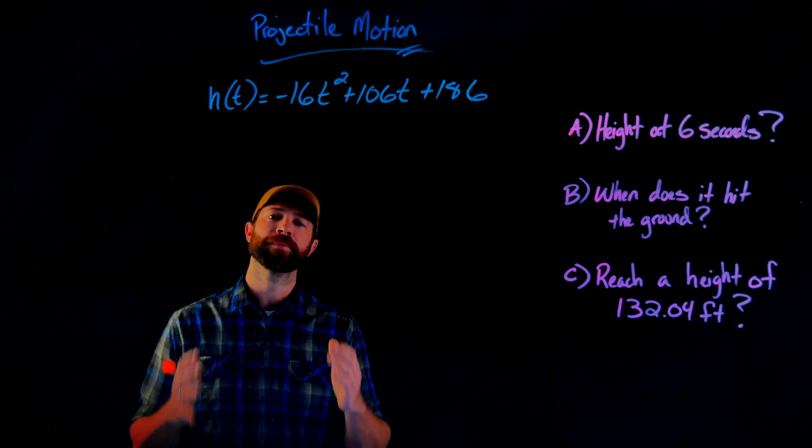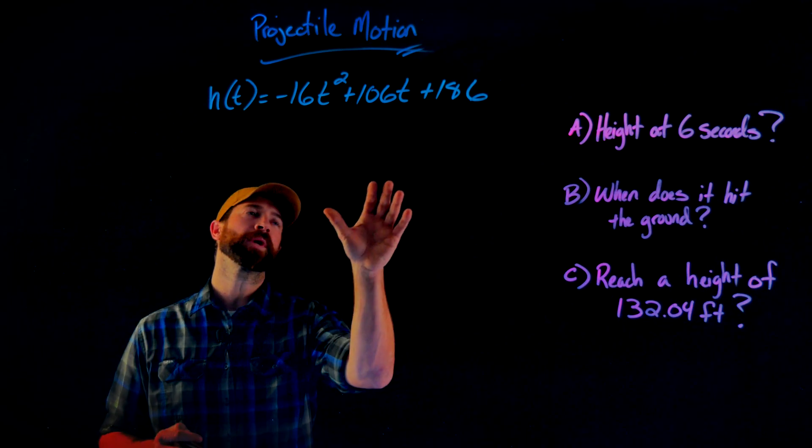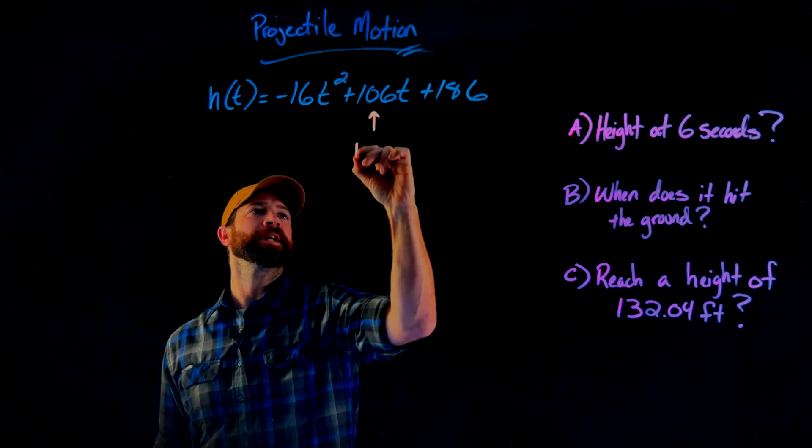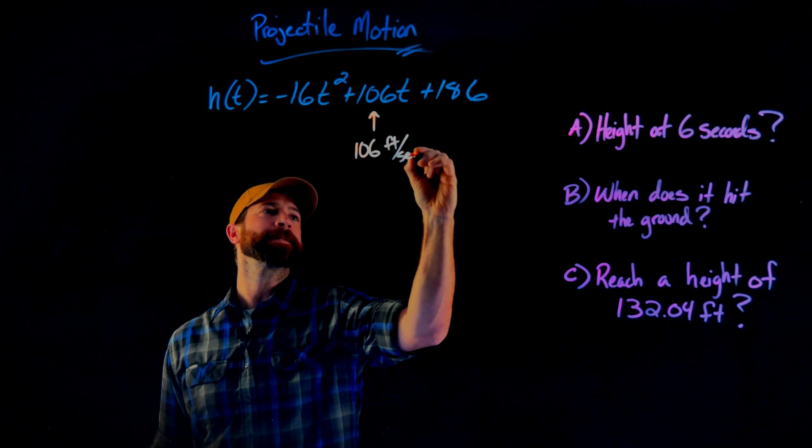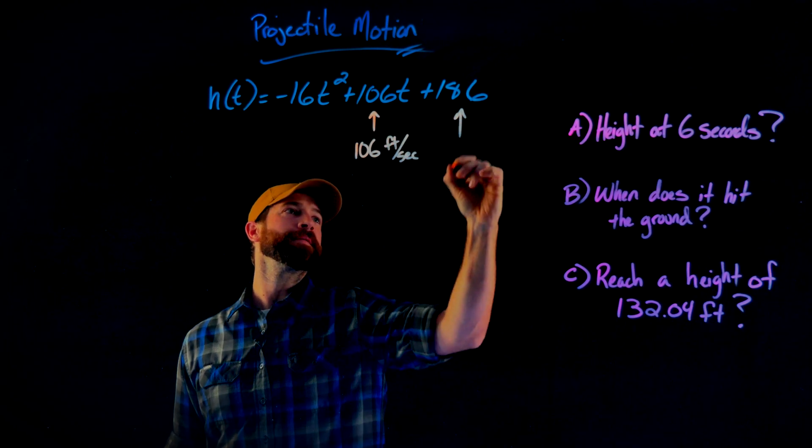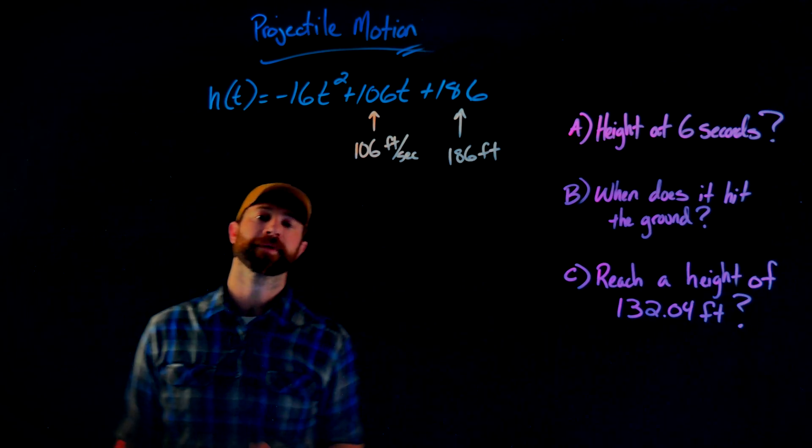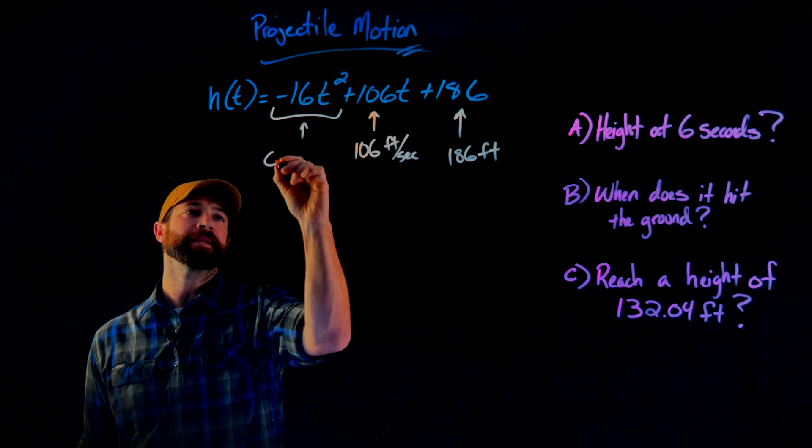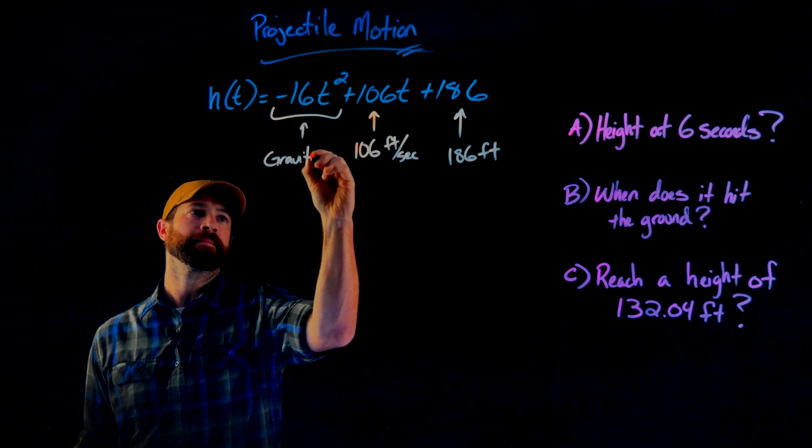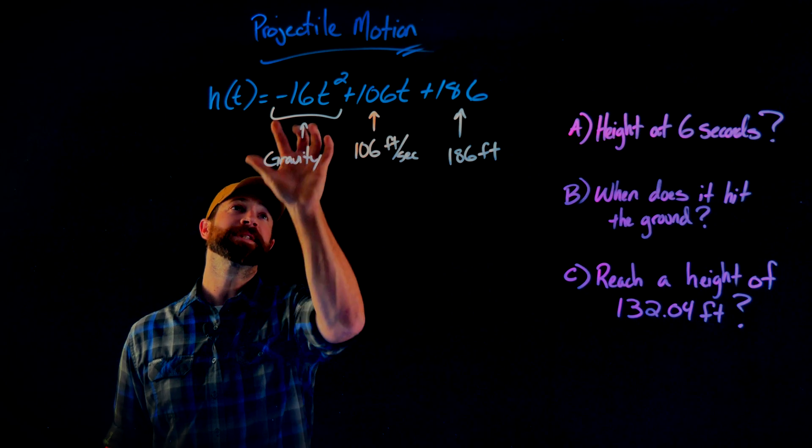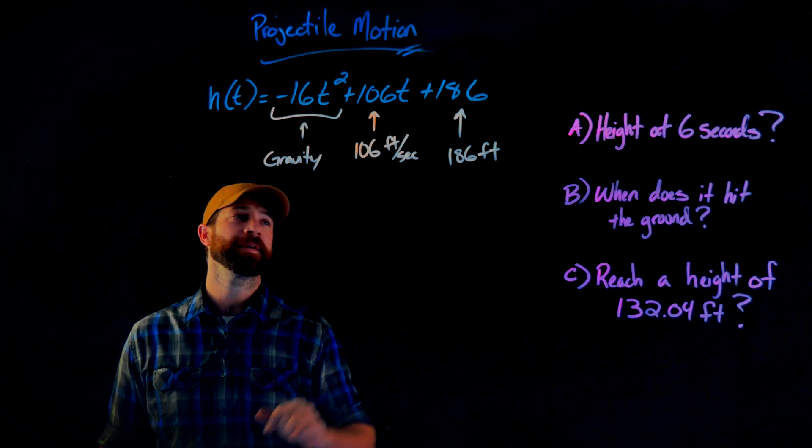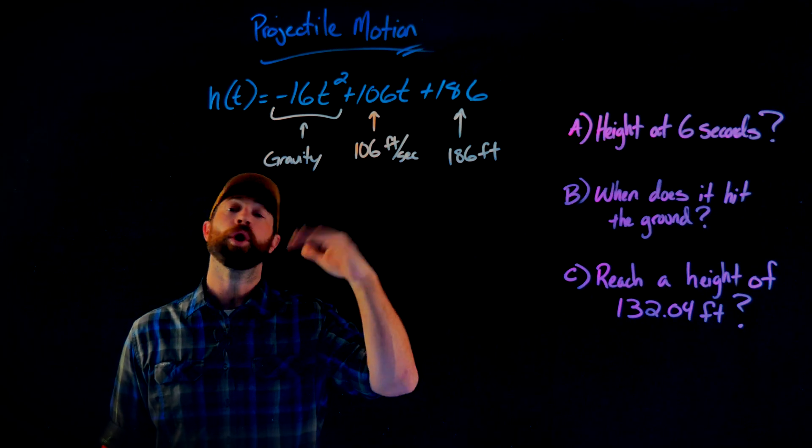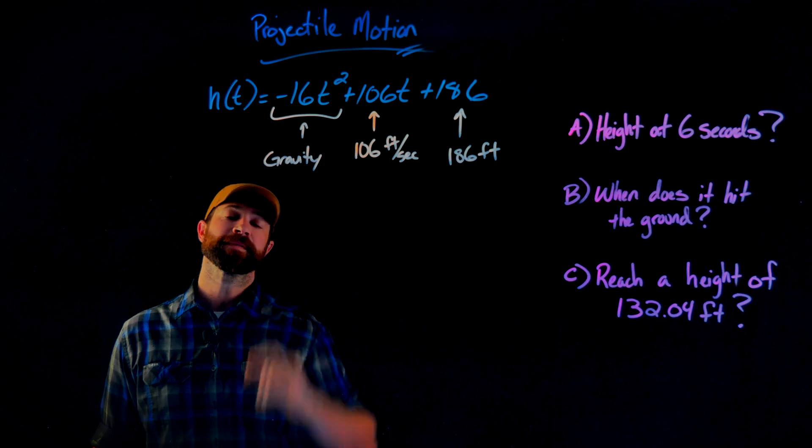Here we're dealing with a projectile motion equation. This equation represents the height of an object that had an initial velocity of 106 feet per second from a height of 186 feet off the ground. This term here is the effect of gravity. Notice that the gravity term is the only term with a negative coefficient. The other two coefficients are positive because they increase the height of the object. The only thing bringing the height down is the effect of gravity.